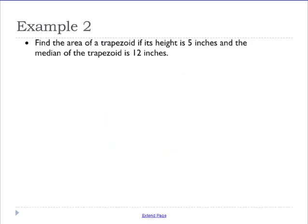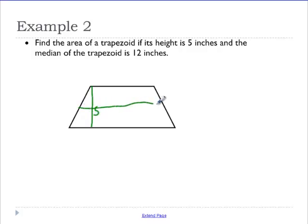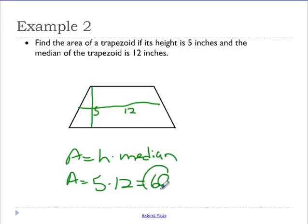Find the area of a trapezoid if its height is 5 and the median is 12. So, let's get a trapezoid drawn here. We have a height of 5 and the median is 12. Area equals height times median. So, the area is 5 times 12, or just 60.